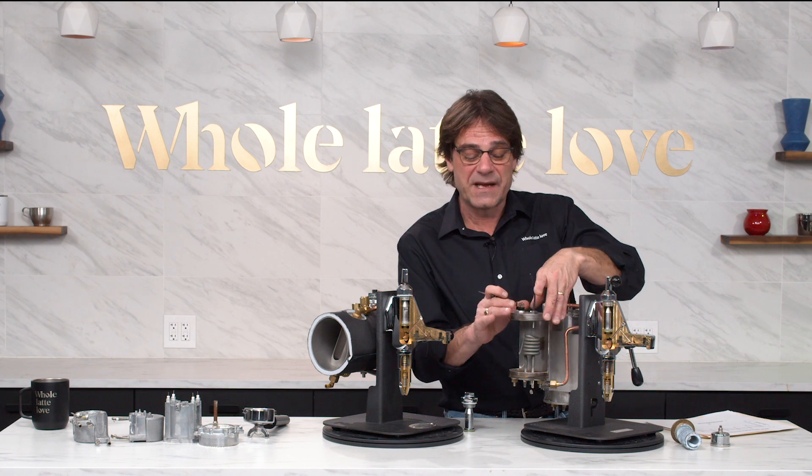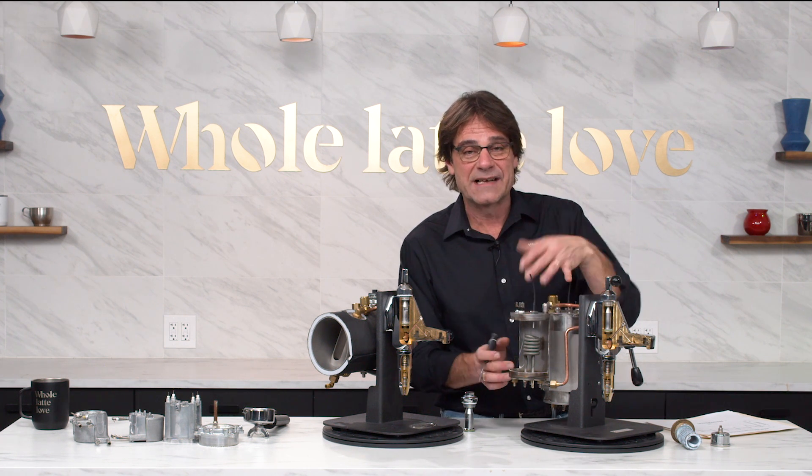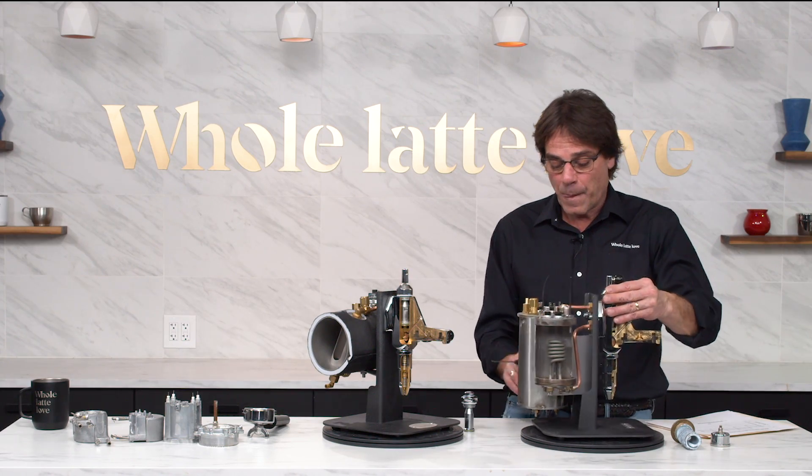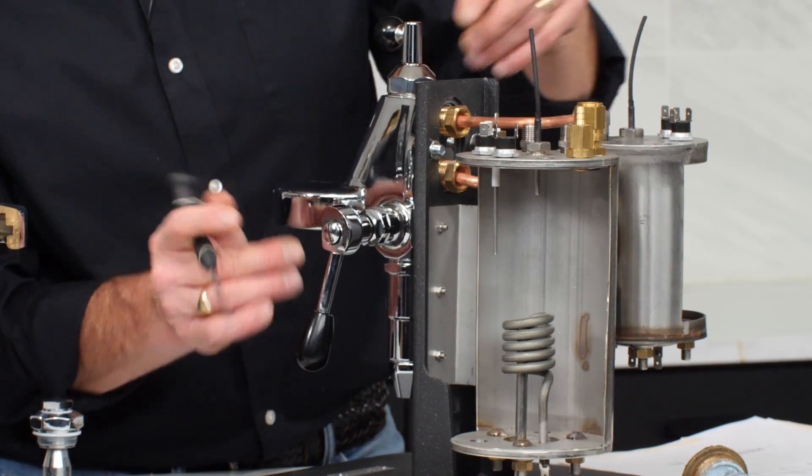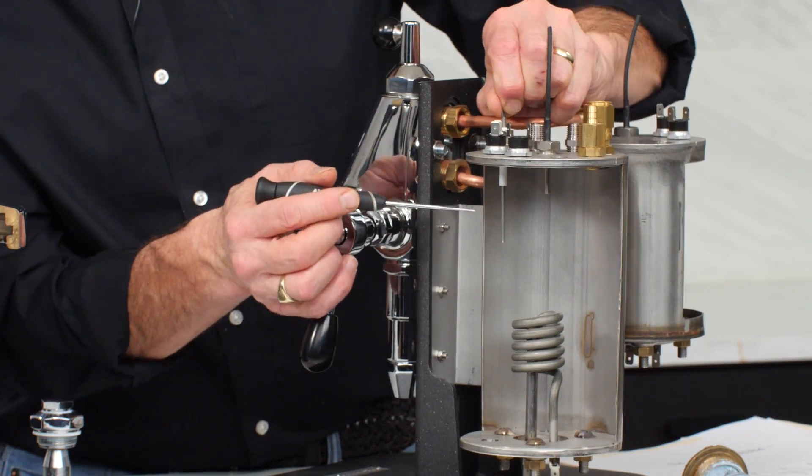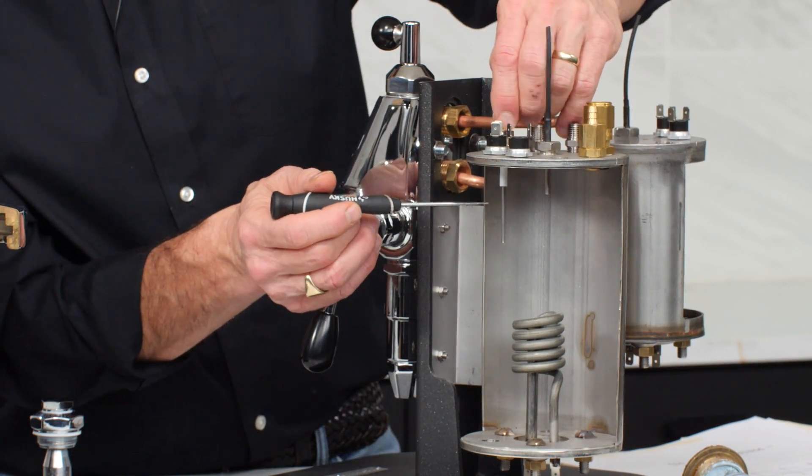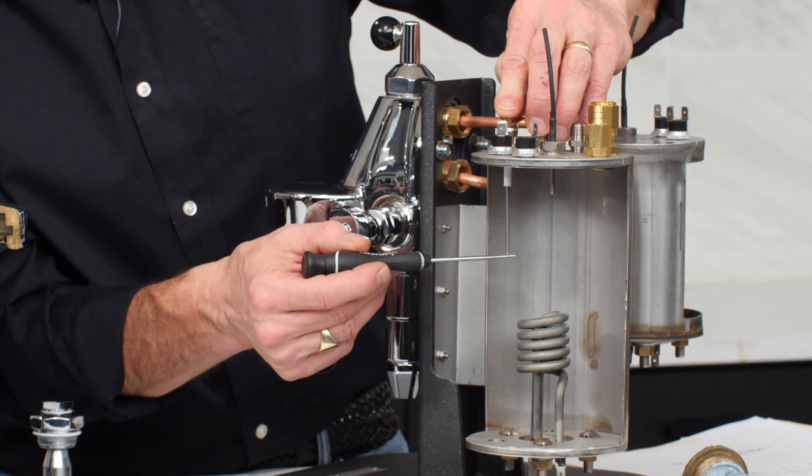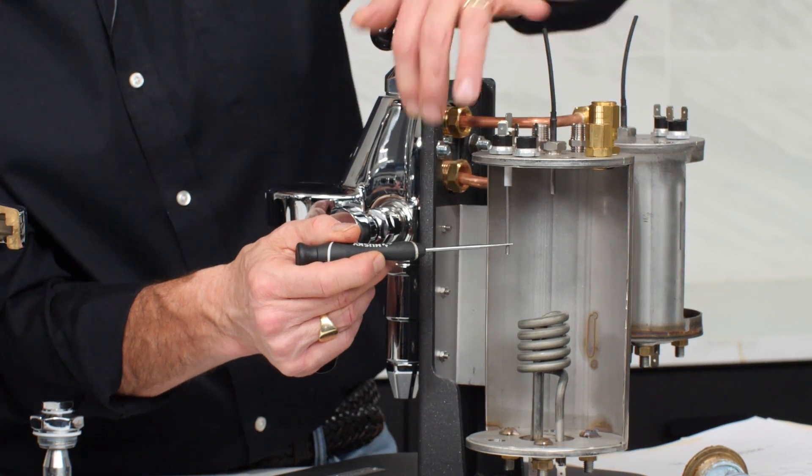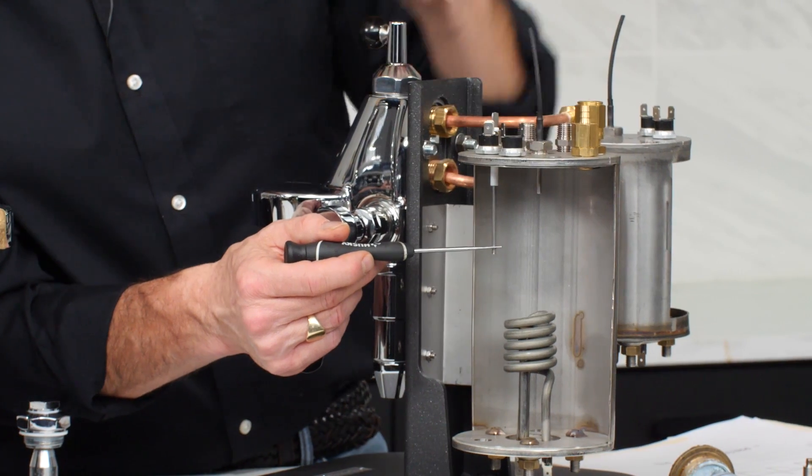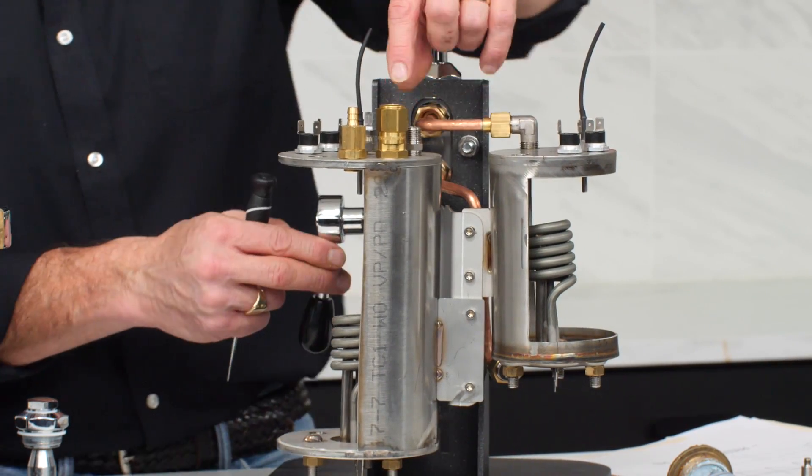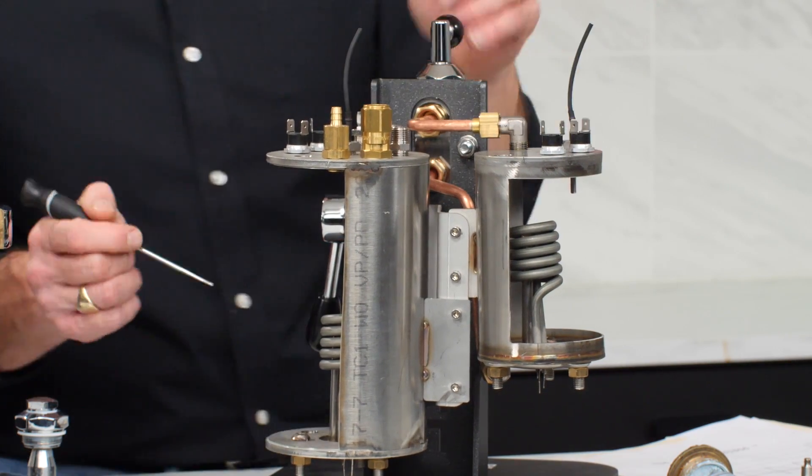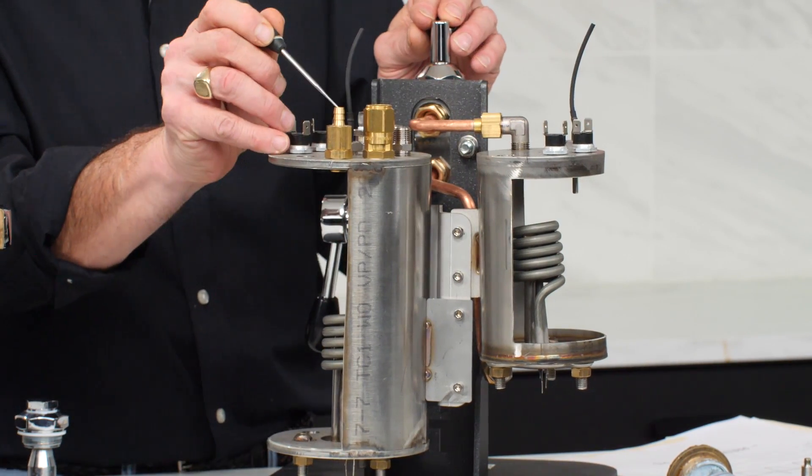And again, we're going to have that constant convective thermosiphon flow out to the group and back. So water is going to be constantly flowing out to the group and back down to the bottom boiler and back through. So that's going to heat up everything here and give you a really nice, solid, constant temperature. PID with a separate brew boiler, that's going to give you the most constant temperatures you can get. Now take a look over here at the steam boiler.